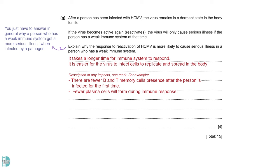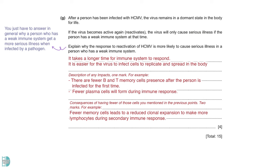Then, provide an impact following primary immune response after viral activation. For example, there are fewer B and T memory cells present after the person is infected for the first time. The last two marks are given to any consequences of fewer immune system cells. For example, you can say that when there are fewer memory cells, there will be a reduced clonal expansion to make more lymphocytes. And if there are fewer plasma cells, there will be a lower concentration of antibodies being produced.